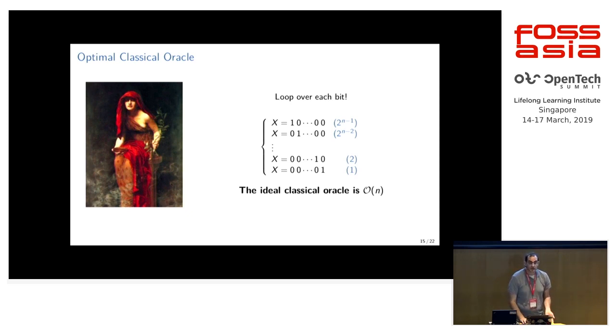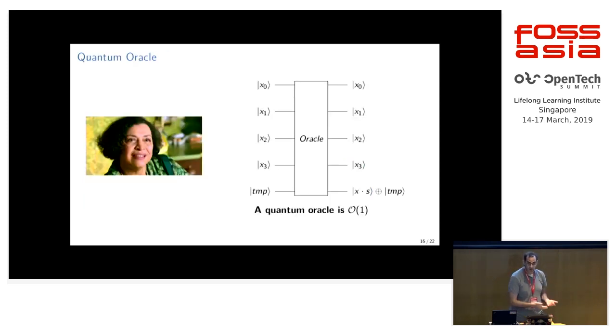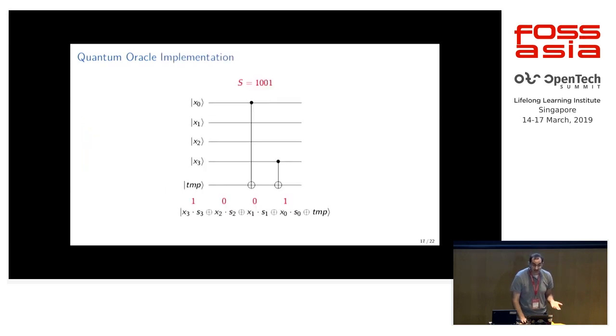But on a quantum computer, you can do this in a single call to the Oracle function. You give it your input, you'll get the output in one call. It turns out the implementation of the Oracle function is actually really simple. It's just a bunch of CNOTs. You basically put the control bit on any qubit where there's a one. And then the target is this temporary bit. And zero if there's nothing. You put nothing if there's zero.